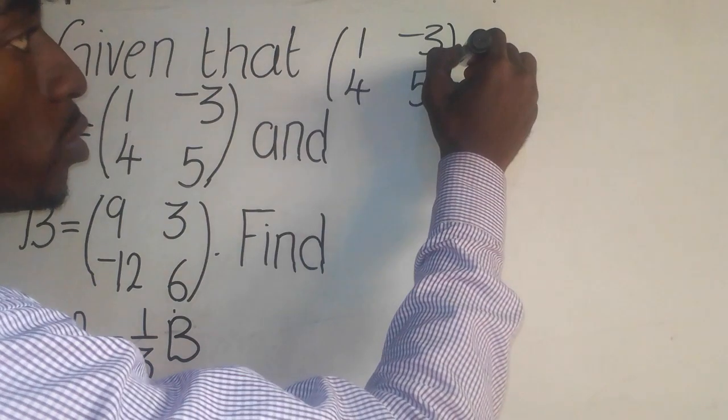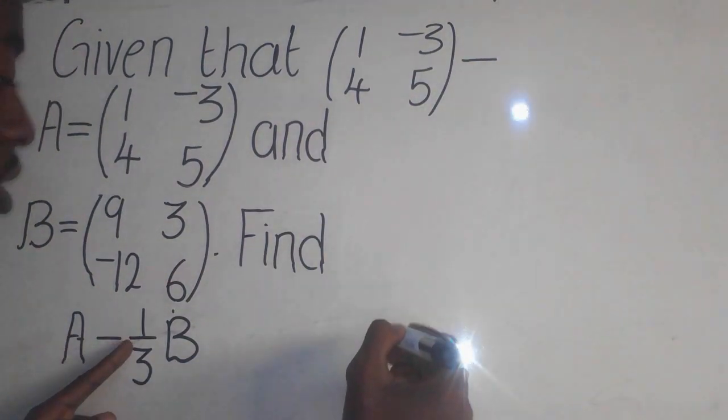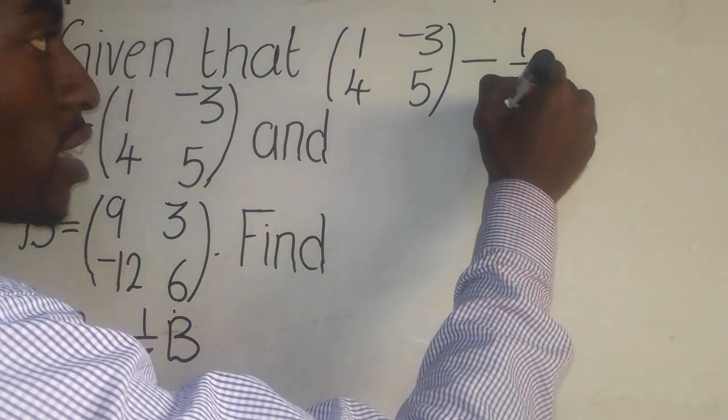So here we have minus, so you put a minus here. So we have 1 over 3, so here you put 1 over 3 there.